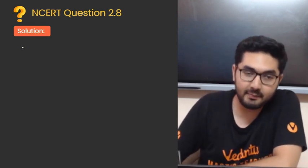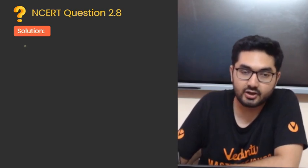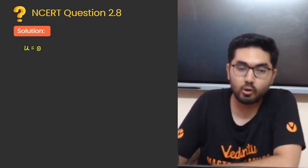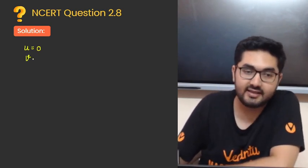Sabse pehle main kya karta hoon? Let me initially, hamare paas kya information de rakhi hai? That u is equal to 0. Ek ball ko agar drop kiya, to u zero ho jayega. U zero hoga, to sabse pehle v nikal lete hain.